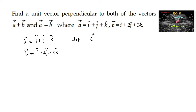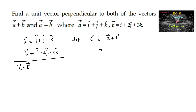Let us consider vector c equal to a plus b. Adding these two vectors, a plus b is equal to 2i plus 3j plus 4k.